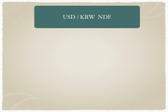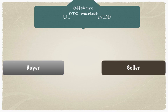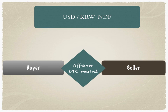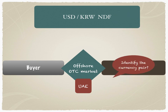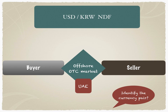Let's take an example of a USD/KRW NDF — KRW is the symbol for Korean won — and understand the terms and definitions of an NDF structure. The buyer and the seller enter into a contract to trade USD/KRW. Let's say this takes place in an offshore market like the UAE. The currency pair is USD/KRW, the market is UAE. Now, KRW is not the home currency for UAE — UAE's home currency is AED. The home country for KRW is South Korea.